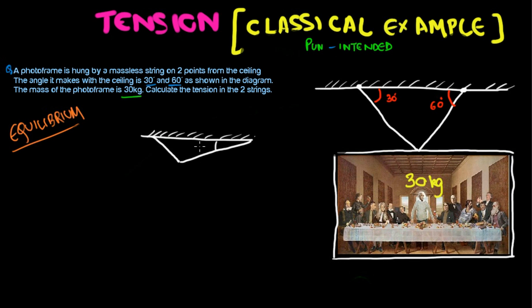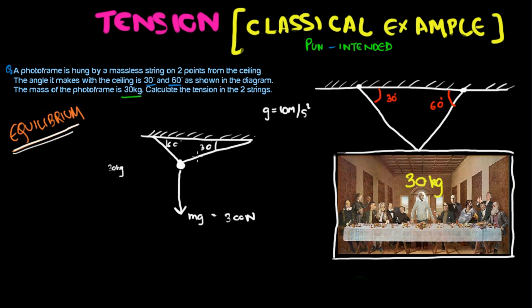This angle is 30 degrees and this is 60 degrees. The frame has a mass of 30 kg, and this is being pulled down by gravity — that's mg, which would be 30 times 10. Taking g as 10 m/s², this gives 300 newtons. We know this is in equilibrium, meaning there's no acceleration — the frame is neither going down nor sideways — so the forces in the x and y directions cancel each other out.